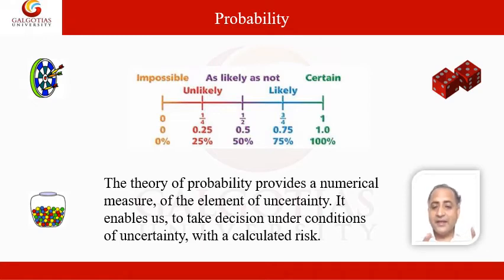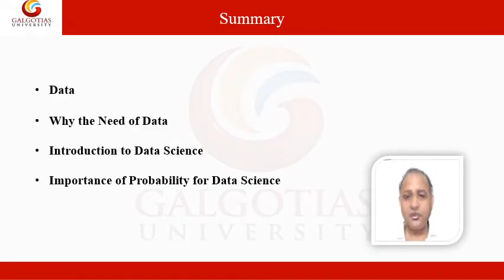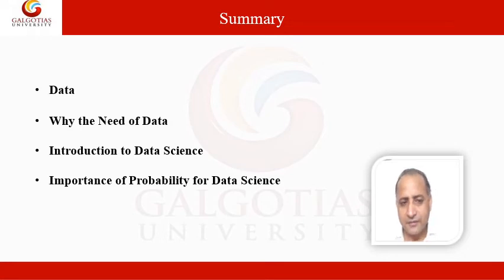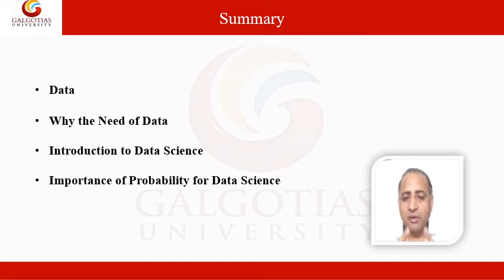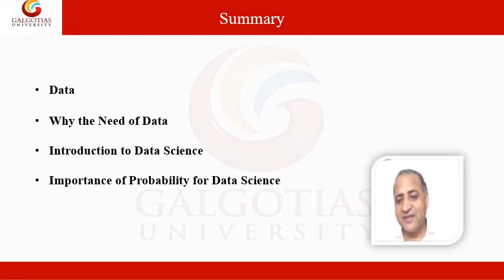So it enables us to take decisions under conditions of uncertainty with a calculated risk. In today's session, we have discussed about what is data, why the need of data, introduction to data science, and the importance of probability for data science. In our next session, we shall discuss the basic terminology used to define probability of an event to happen.